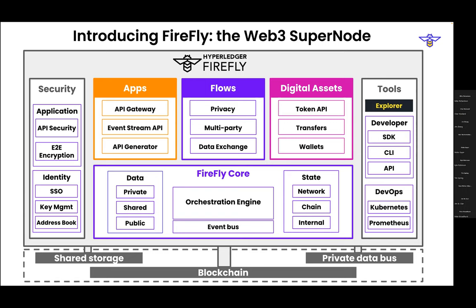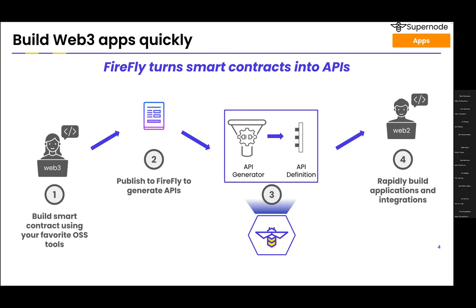Let's break down apps, flows, and digital assets in a little more detail. One of the really cool features that Firefly has is that it will let you build HTTP APIs from smart contracts. You can import a custom smart contract — if it's Ethereum, you can provide an Ethereum ABI — and Firefly will generate on the fly an API for it, letting you rapidly build integrations and applications. It also stores information about the API on the chain and can broadcast that to other parties. There's the ability to subscribe to events emitted by those contracts, to index those events, query them, and get state out of the contract — all through Firefly's API.